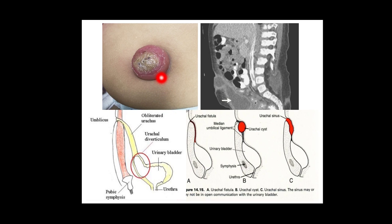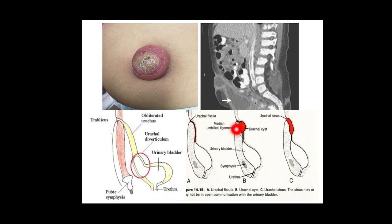This here is a cyst of the urachus — the urachal cyst, specifically the umbilical part. You can see it on CT: there is the bladder, the umbilicus, and the obliterated normal urachus. It can form a fistula — a urachal fistula — with communication between the bladder and the umbilicus. In some cases the rest of the urachus is obliterated but there is a cystic dilatation, known as a urachal cyst. If only the umbilical portion is open, it is a urachal sinus. This picture shows the umbilical urachal cyst extending into the umbilical skin — an example of a cyst of the embryonic remnant.